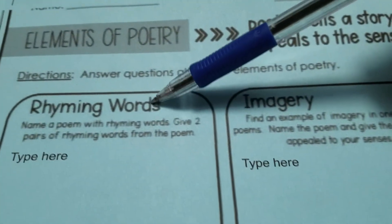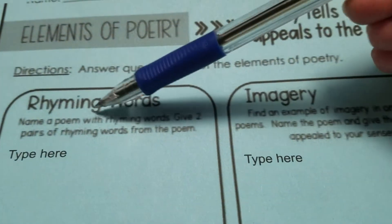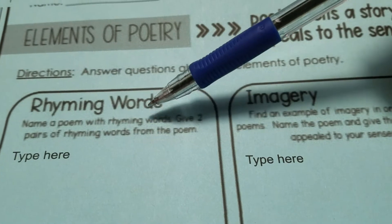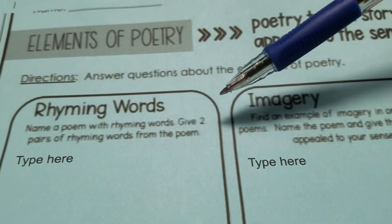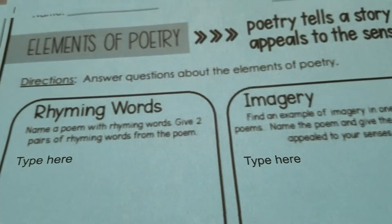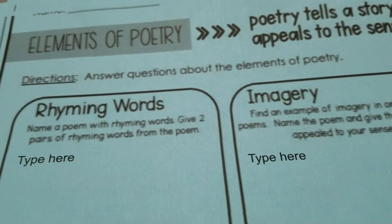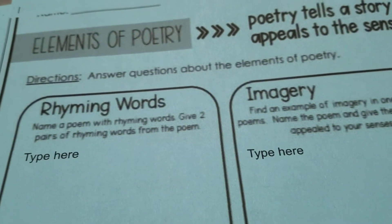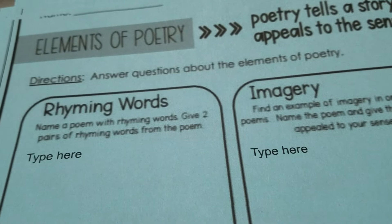For rhyming words, it says name a poem with rhyming words. That's one of the poems that we just read: Great Barrier Reef, Mariana Trench, etc.